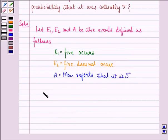So, we see that probability of the event that 5 occurs is 1 by 6 and probability of the event E2, that is 5 does not occur, is 5 by 6.